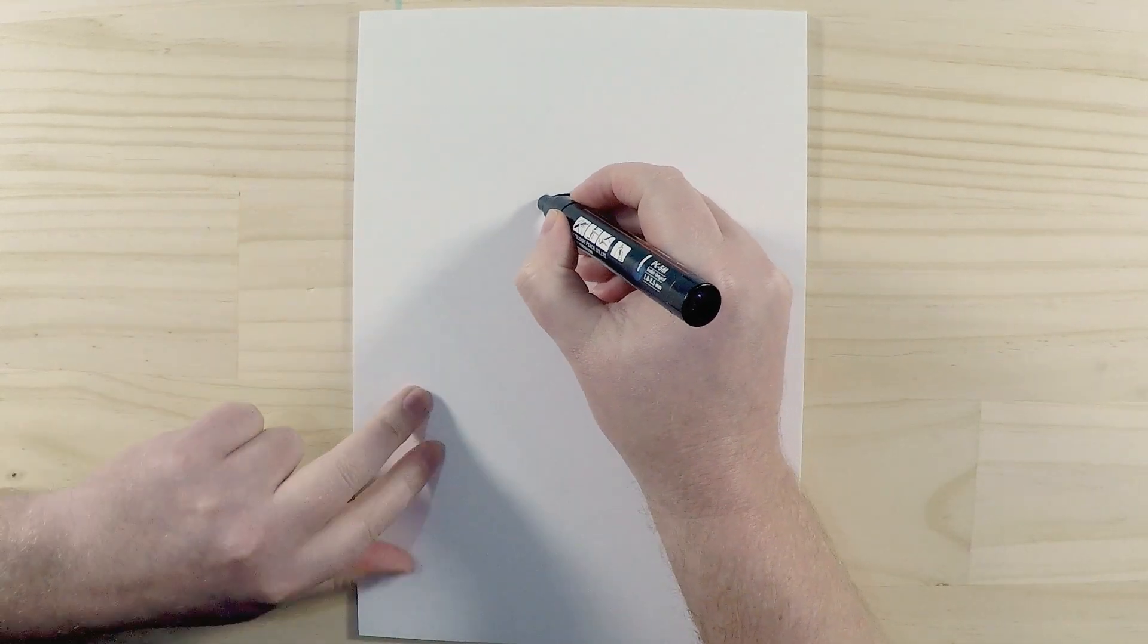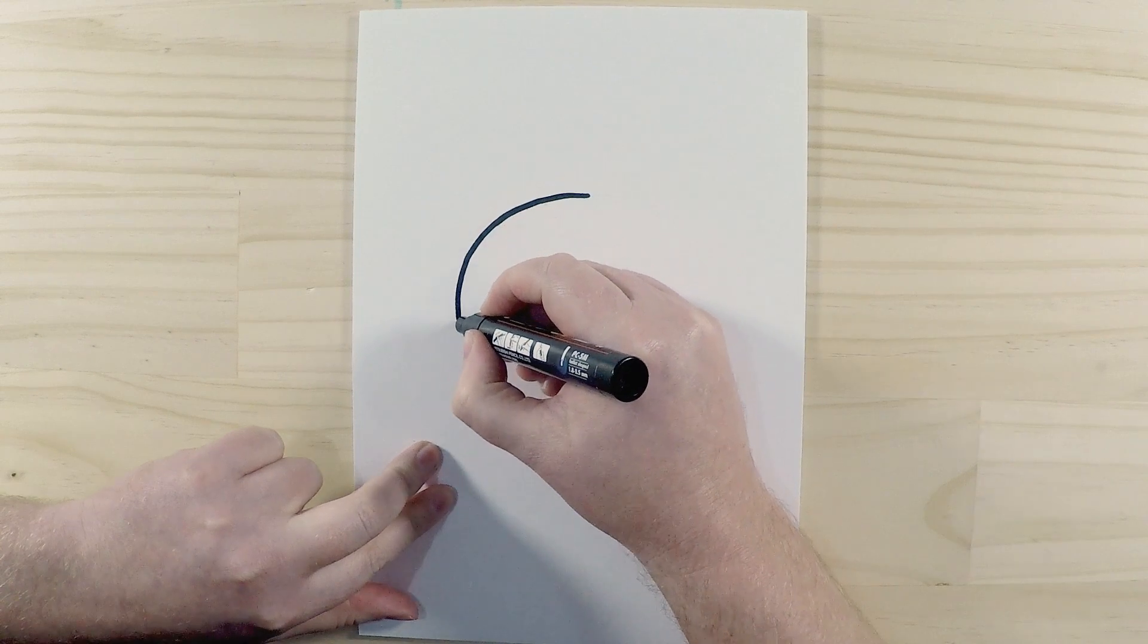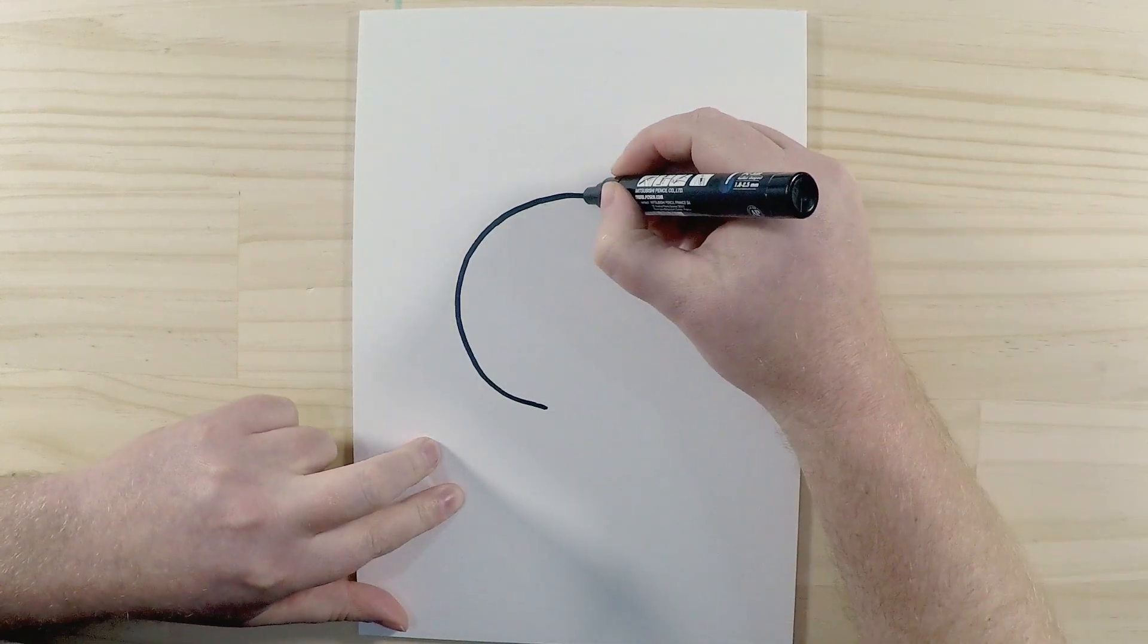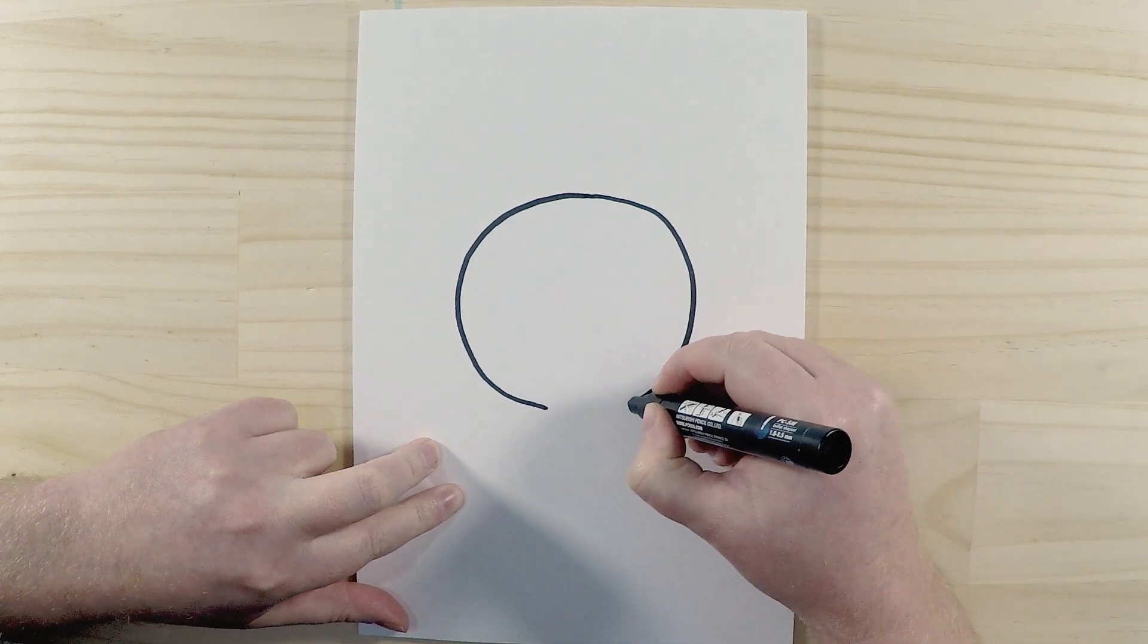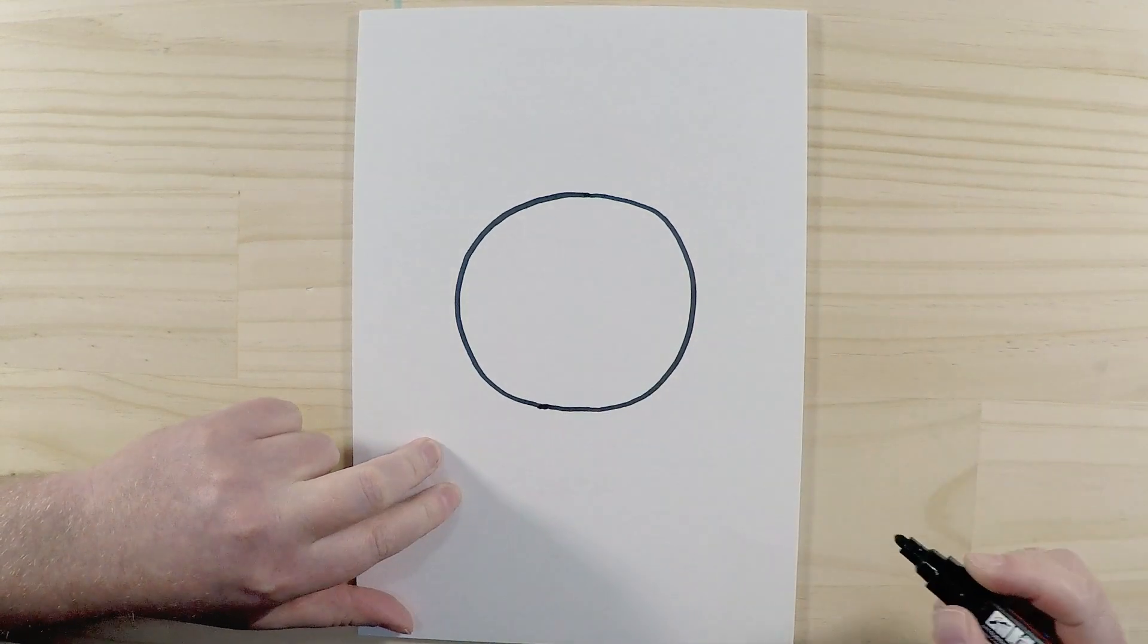so we'll just draw a nice circle here like this, just go around, it's a little bit oval, nice shape like that.